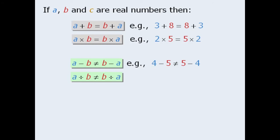Similarly, division is not commutative for every pair of numbers. For example, 6 divided by 2 is not equal to 2 divided by 6.